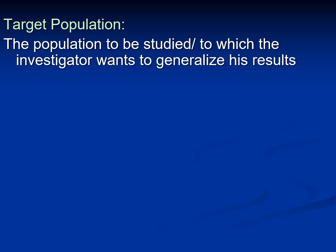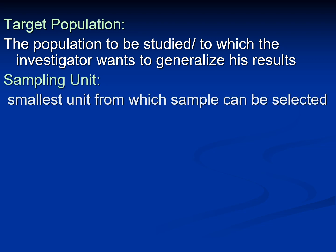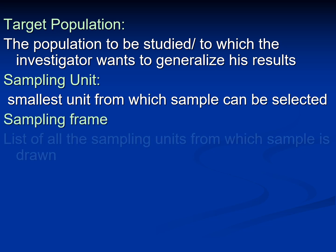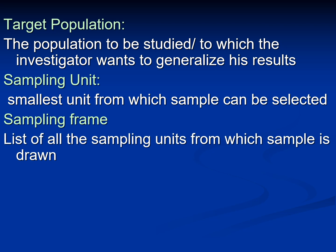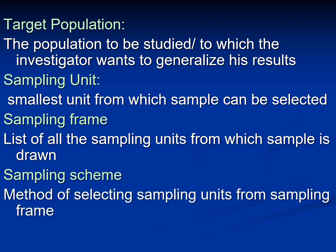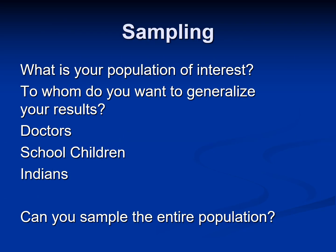We have terms that we need to know. The target population is the population to be studied, to which the investigator wants to generalize results. Sampling units are the smallest unit from which a sample can be selected. The sampling frame lists all the sampling units from which samples are drawn, and the sampling scheme is the method of selecting sampling units from the sampling frame.